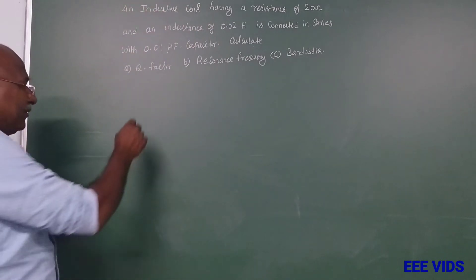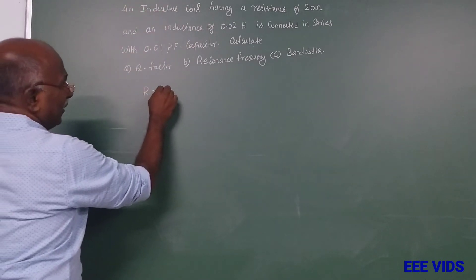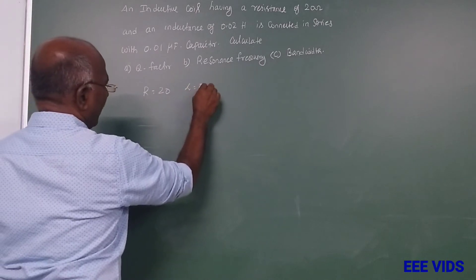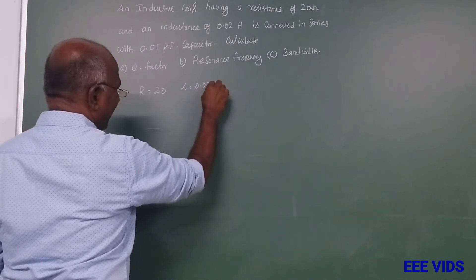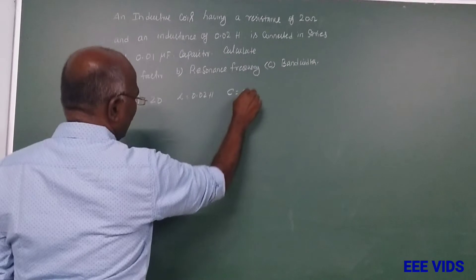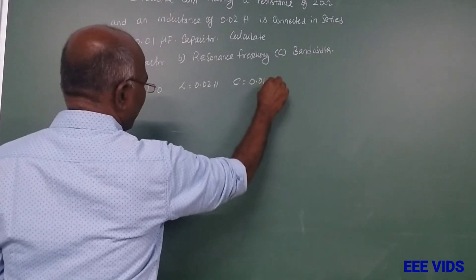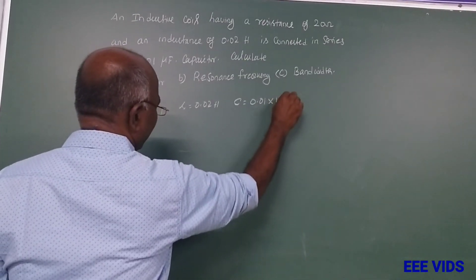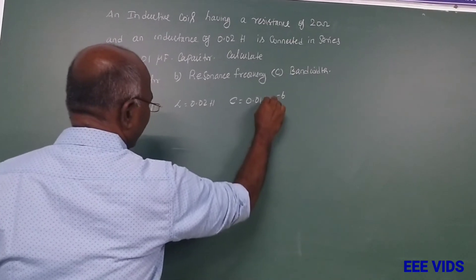So R value is 20 ohms, L value is 0.02 henry, and C value is 0.01 into 10 power minus 6.